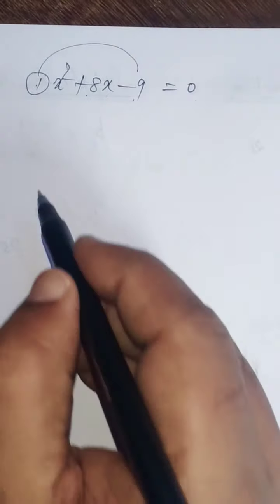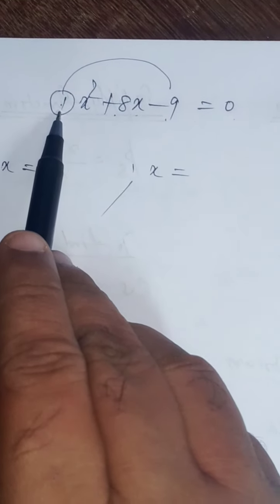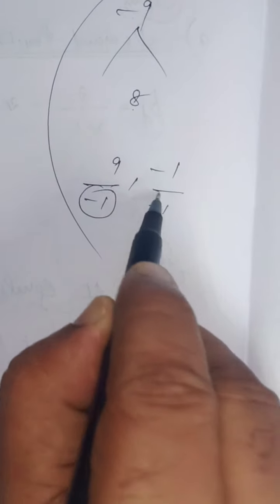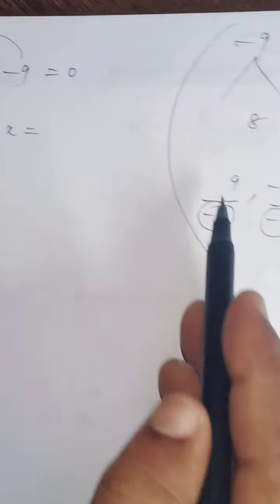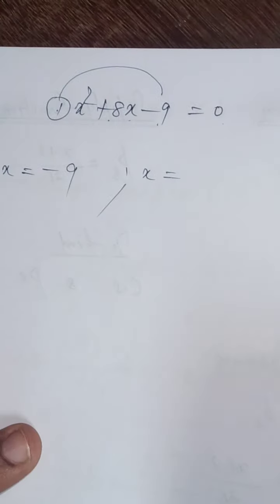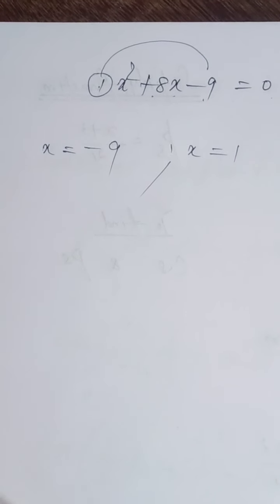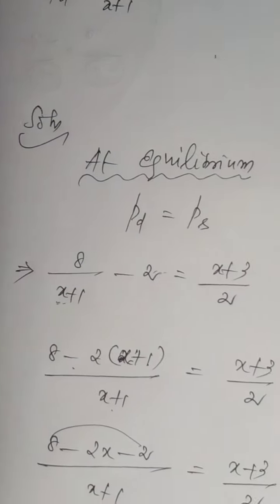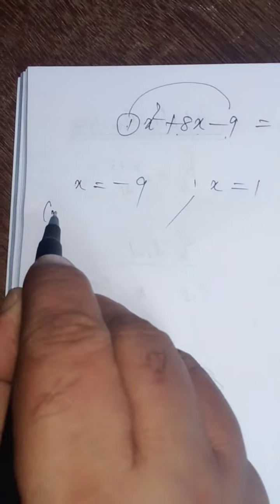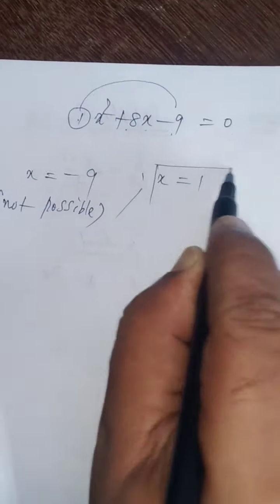Since it is a quadratic equation, we can find the values of x directly. The coefficient of x squared is 1; changing the sign and writing minus 1 in the denominator, plus 1 becomes minus 1. We get x equals 1 and x equals minus 9. Since x represents demand or supply, x cannot be negative, so the negative value is neglected. We consider x equals 1 only.